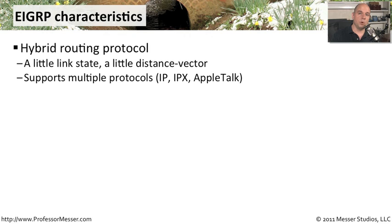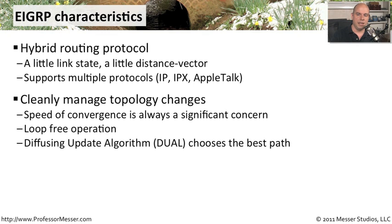EIGRP also supports more than just IP. You can run IPX and AppleTalk over EIGRP as well, which makes it very flexible. It's a type of protocol you can use in many different kinds of situations. It also very cleanly manages whenever a topology changes, and convergence is one of the major concerns whenever we're deciding on a particular routing protocol.